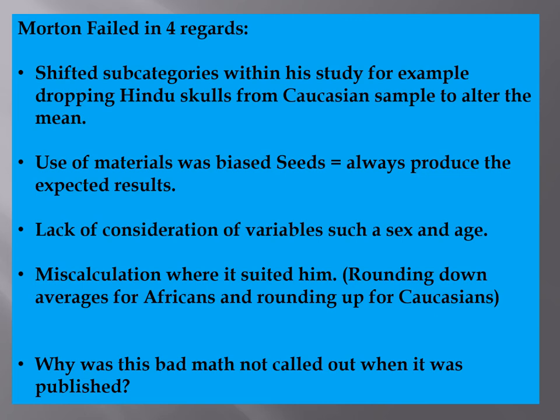Morton failed in four regards: he shifted subcategories, for example dropping Hindu skulls from the Caucasian sample to alter the mean. The use of materials was biased — he used seeds, which always produced the expected results. There was a lack of consideration of variables such as sex and age; he just grabbed random skulls. And he miscalculated where it suited him, rounding down averages for Africans and rounding up averages for Caucasians. This bad math wasn't called out because it supported the cultural notion of African inferiority.